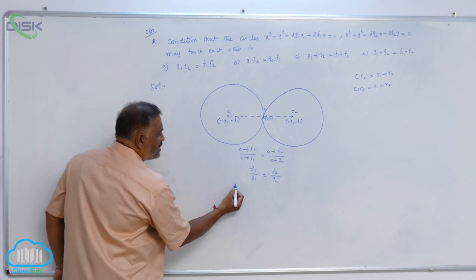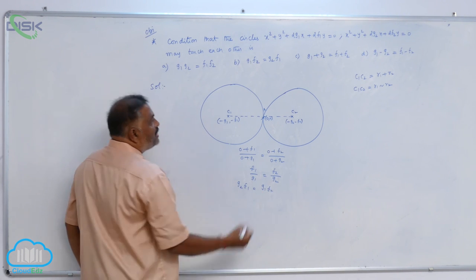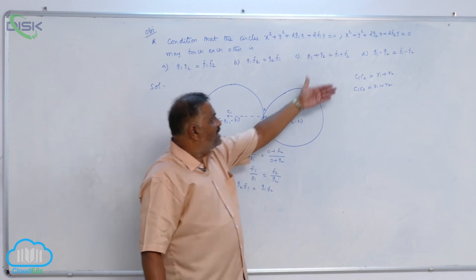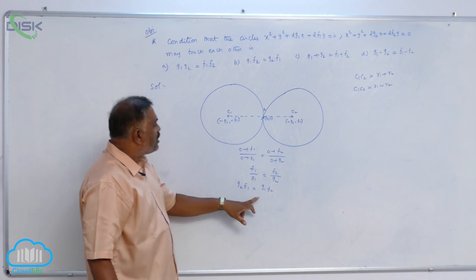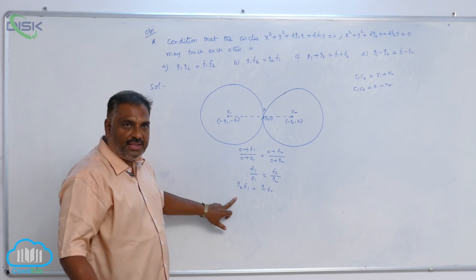Cross multiplication, g2f1 is equal to g1f2. So, whether you can apply this condition or directly this one, you are going to get g1f2 is equal to g2f1 in the same manner.